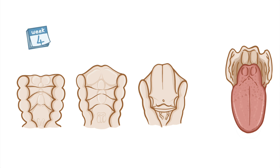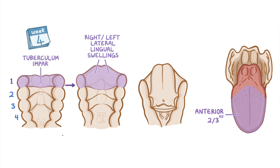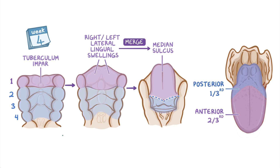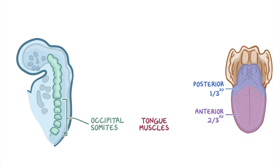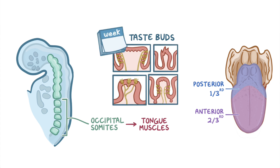As a quick recap: the tongue starts developing by week 4 of intrauterine life from the first four pharyngeal arches. The anterior two-thirds develops from the first arch mesenchyme as the tuberculum impar and two lateral lingual swellings, which grow over the tuberculum impar and merge along the midline, eventually forming the median sulcus. The posterior one-third develops from the second pharyngeal arch as the copula, and from the third and fourth pharyngeal arch as the hypobranchial eminence. Finally, the tongue muscles derive from the occipital somites, and taste buds finish appearing over the tongue around week 13.